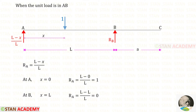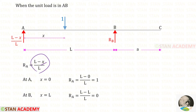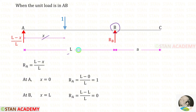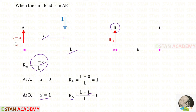RA is acting in the clockwise direction so it will be positive and the distance is L. The unit load is acting in the anti-clockwise direction so it will be negative. For the unit load, the distance is L minus x. So for RA, we will get (L minus x) upon L. At point A, x will be 0, so RA equals 1. At point B, x will be L, so RA equals 0.